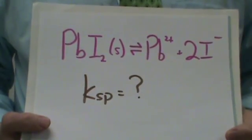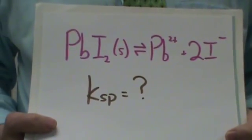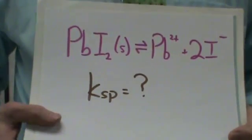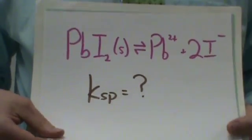What would be your K expression? It would be the concentration of Pb2+ times the concentration of iodide squared.